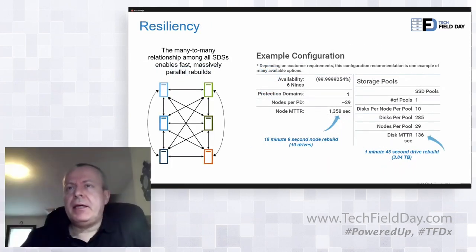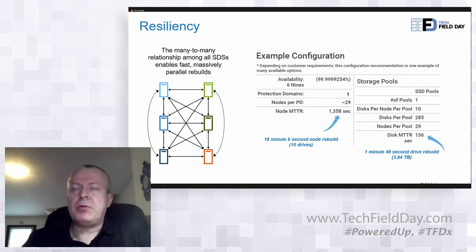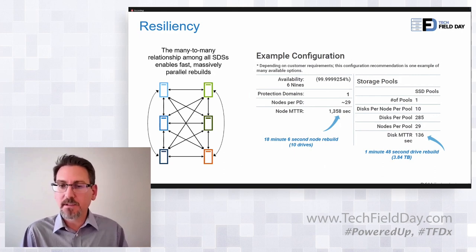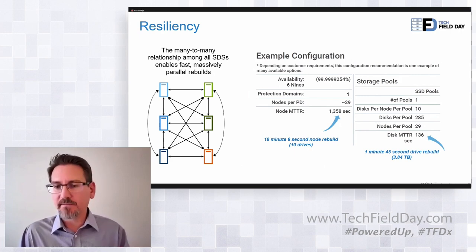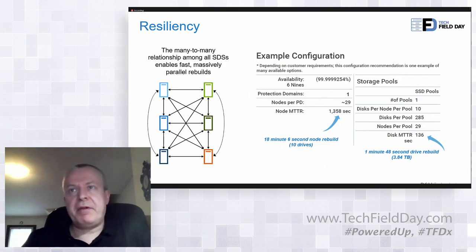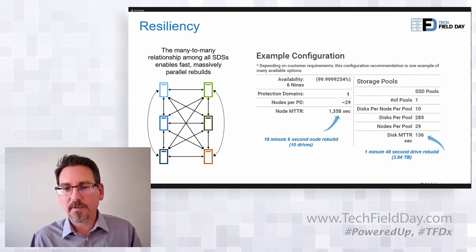This is over an Ethernet connection — no Fibre Channel, no iSCSI. An audience member asks about RDMA to reduce latency. The protocol used is proprietary — it's our own for storage communications between the SDCs and SDSs. It's a very efficient, lightweight protocol — that's part of our secret sauce. It is IP-based, supporting IPv4 and IPv6, over a TCP port.